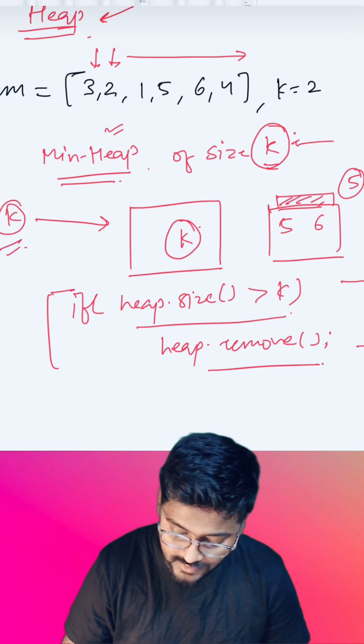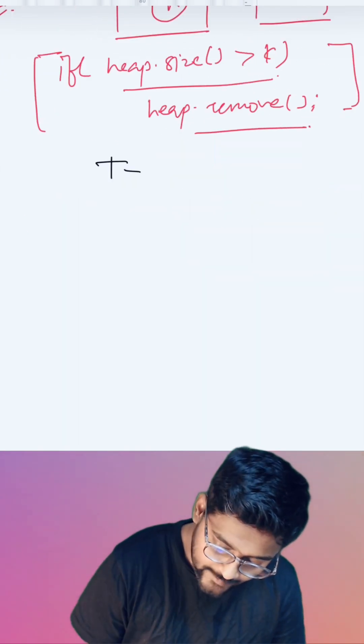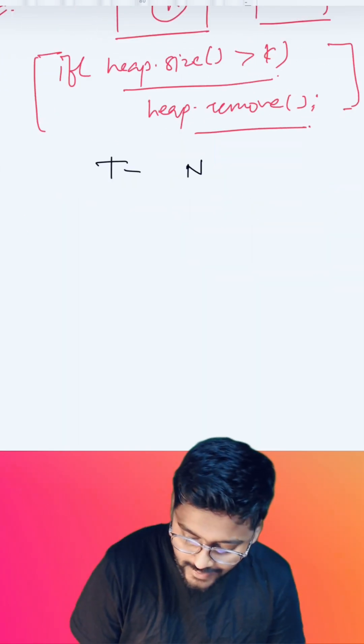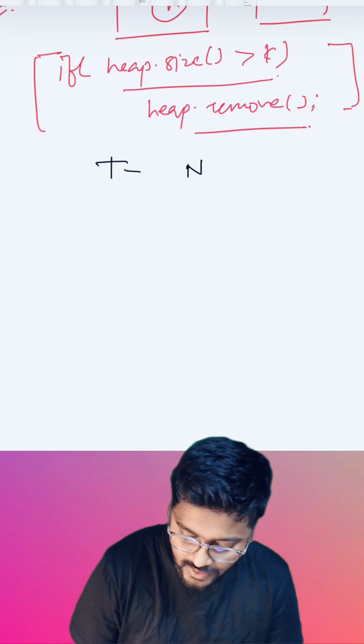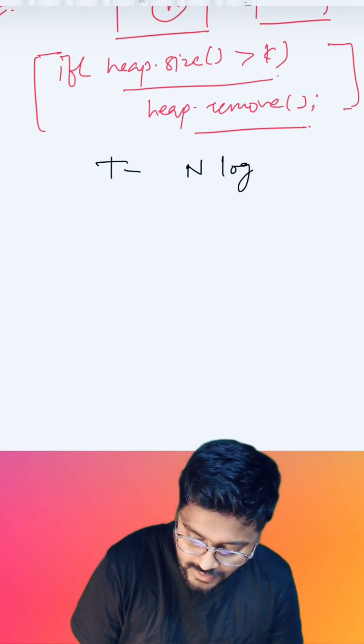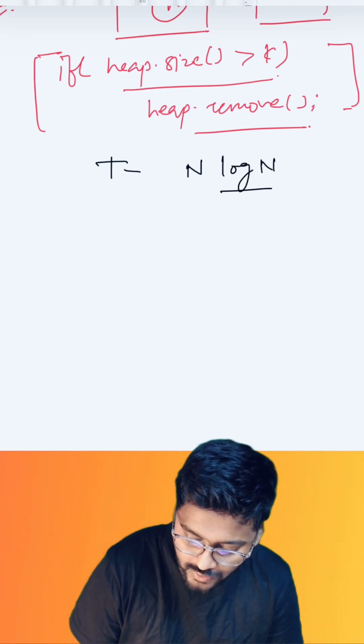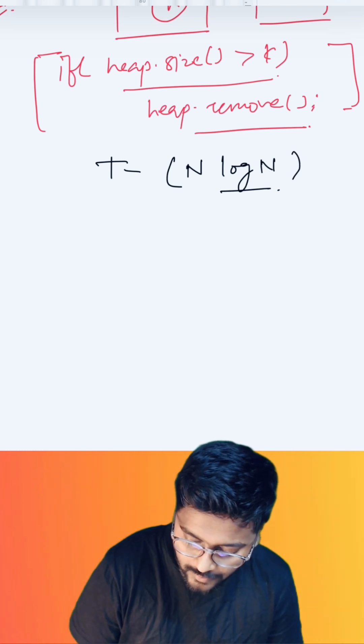In this case, what is the time and space complexity? Time complexity is we are iterating over n number of elements, and for every element we are inserting that element in the heap. Inserting an element in the heap is going to take log n time, so the time complexity will remain n log n.